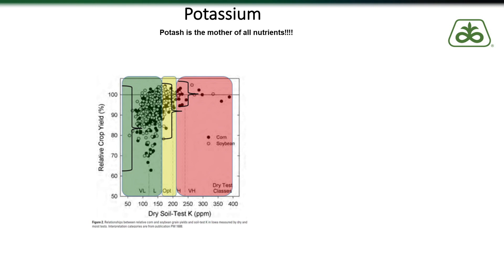As you move from low to very high soil test levels for potassium, you can see that we actually do have some data points that fall up to 100 percent of yield. What this is essentially showing is that if you do have an optimal or near-perfect growing season, there is a chance that you can obtain high yields with low soil test levels. However, as you move from low to high to very high soil test levels, look what happens to the bottom end range of the yields. You can see as we move from left to right in this chart that our yield variability decreases, and as we get to the high to very high soil test levels, we have almost all of the data points falling near the 100 percent yield level.